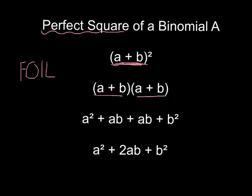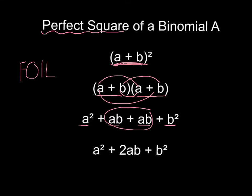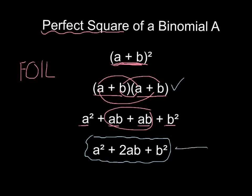So let's look at what happens after we FOIL. a times a is a squared. Our outside terms: a times b is ab. b times a is ab. And then b times b is b squared. Add your middle terms and we have 2ab. So make sure you definitely have this written down so we can refer to it. In today's lesson you can get an answer by doing FOIL, but I want you to practice getting your answer by knowing this pattern.